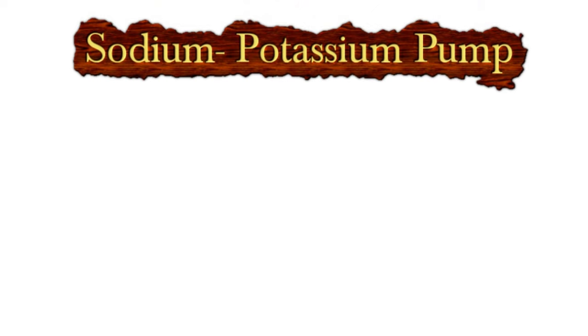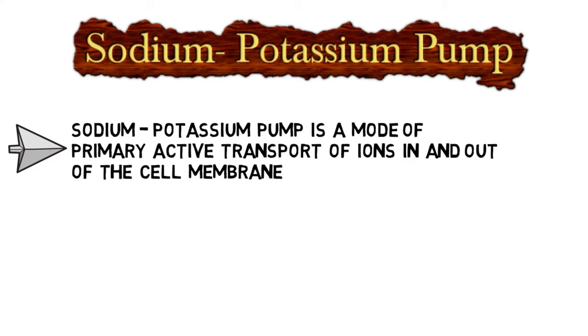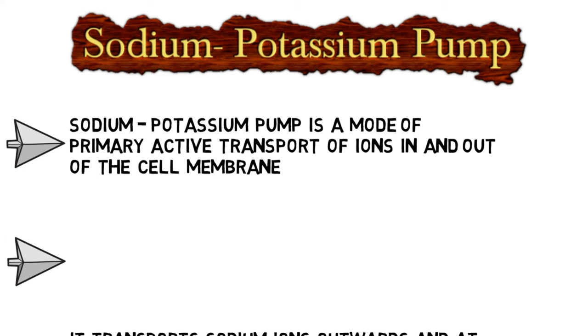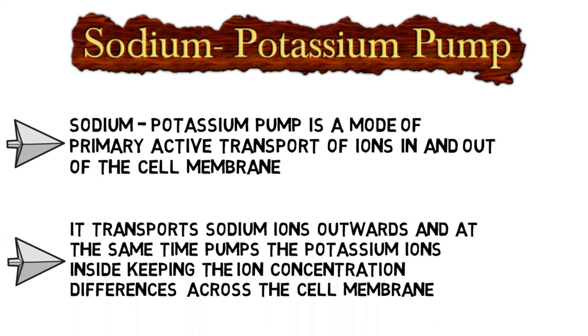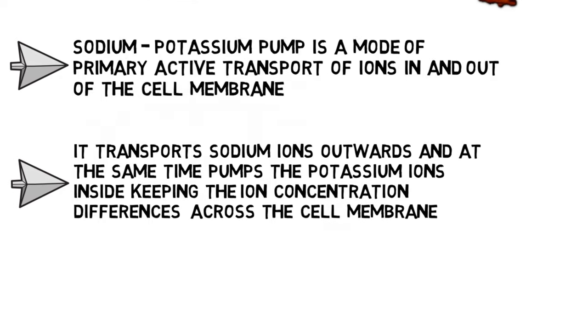The sodium potassium pump is a mode of primary active transport of ions in and out of the cell membrane. It transports sodium ions outwards and at the same time pumps potassium ions inside, keeping the ion concentration differences across the cell membrane.